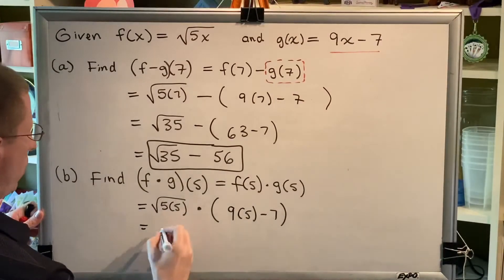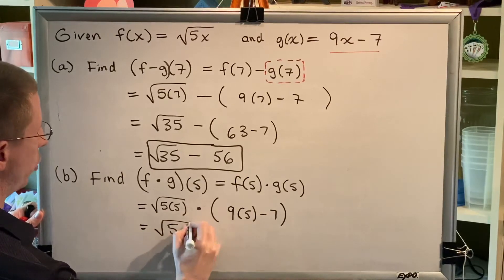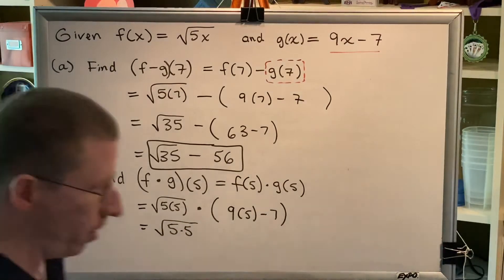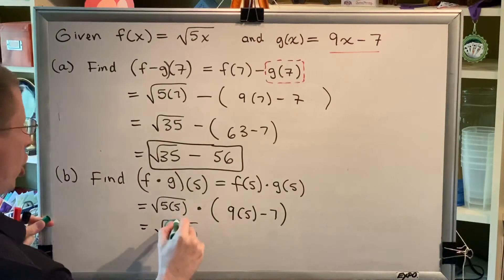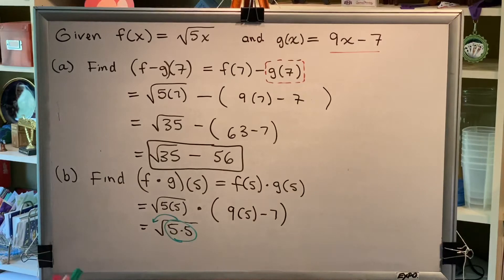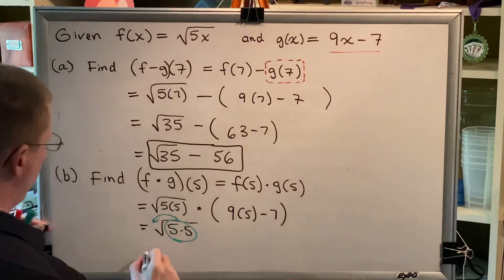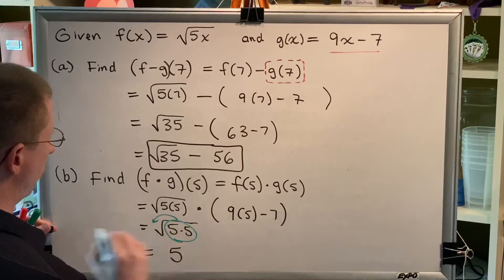Alright, now I'm going to begin the simplifying process. So, whenever you have a square root, and you have two matching factors underneath, they group up and send just one factor out to multiply. And if all factors are perfectly grouped, then they leave no radical symbol behind. In other words, this is just 5.